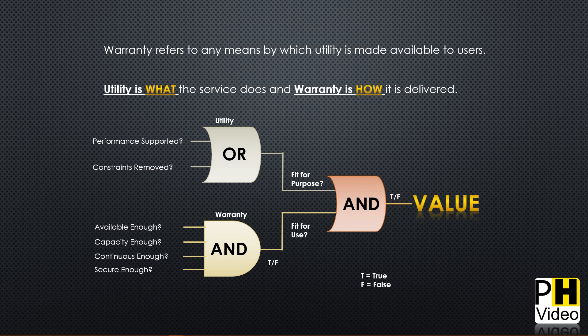Utility can be summarized as: performance supported OR constraints removed — an OR gate. Warranty is: available enough AND capacity enough AND continuous enough AND secure enough — an AND gate. Together, utility and warranty give you value — fit for purpose and fit for use.